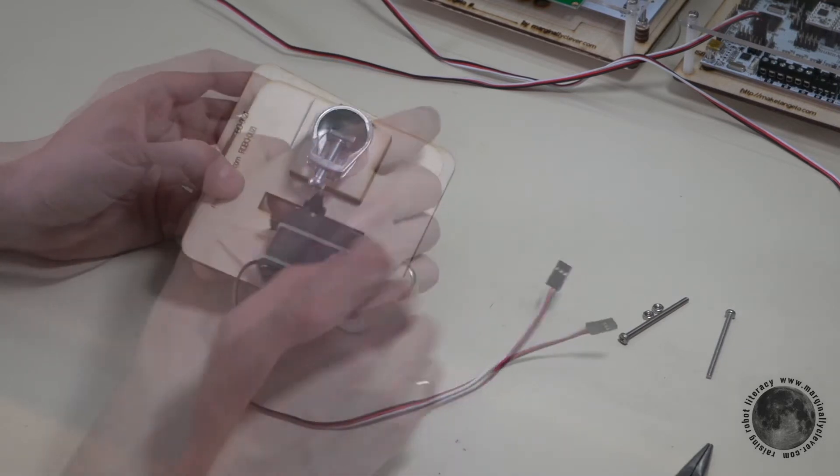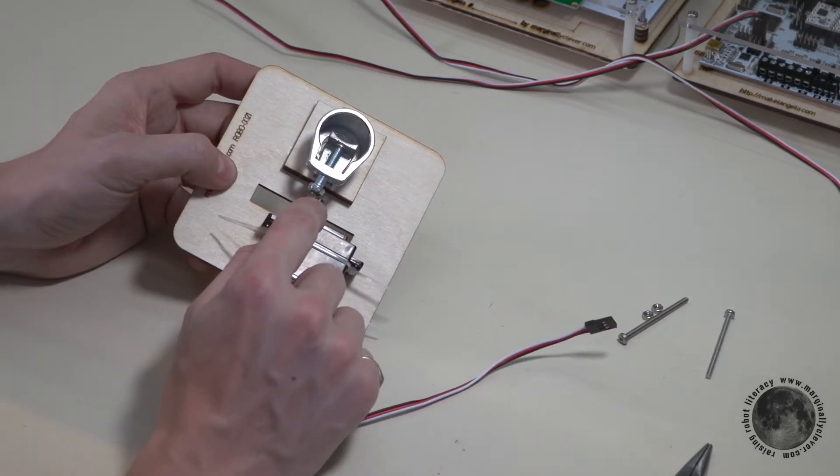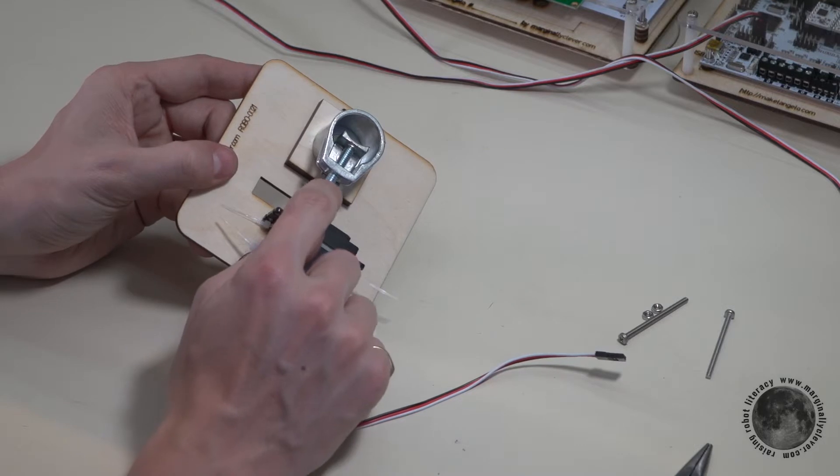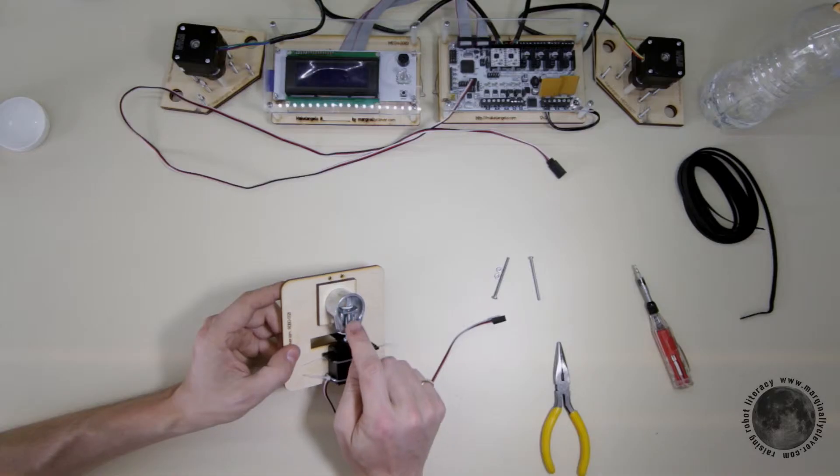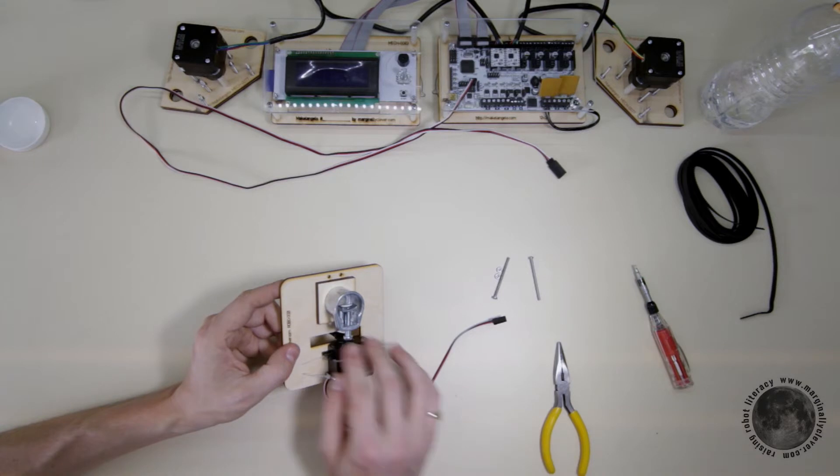And there we have it. If you find that this side of the servo finger interferes with the screw because you have a larger marker in here, feel free to cut it off.